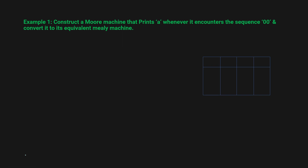Step 1 for constructing a Moore machine is to understand that the output is dependent on the state. It states that if you encounter sequence '00' you have to print 'A'. So let's say you are in starting state A, and you encounter 0, you go to state B. Again you encounter 0, you go to state C, and in this state you should have the output 'A'. In the rest of the states the output can be small 'b'.